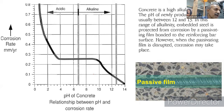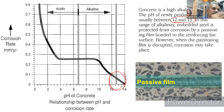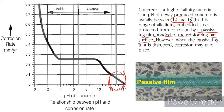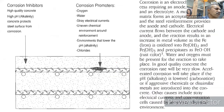Concrete is a highly alkaline material with a pH of 12 to 13. At this pH, the embedded steel is protected from corrosion by an invisible passive film that forms on the reinforcing bar surface. Corrosion occurs when this passivating film is disrupted. In fresh concrete, corrosion is not a big issue, but when the pH decreases or the passive film is destroyed, corrosion begins.